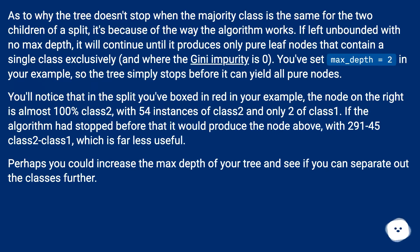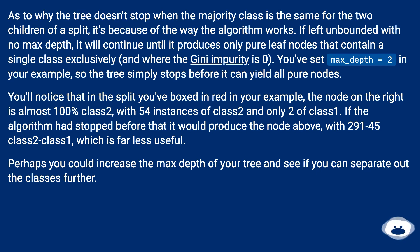As to why the tree doesn't stop when the majority class is the same for the two children of a split, it's because of the way the algorithm works. If left unbounded with no max depth, it will continue until it produces only pure leaf nodes that contain a single class exclusively, and where the Gini impurity is zero.